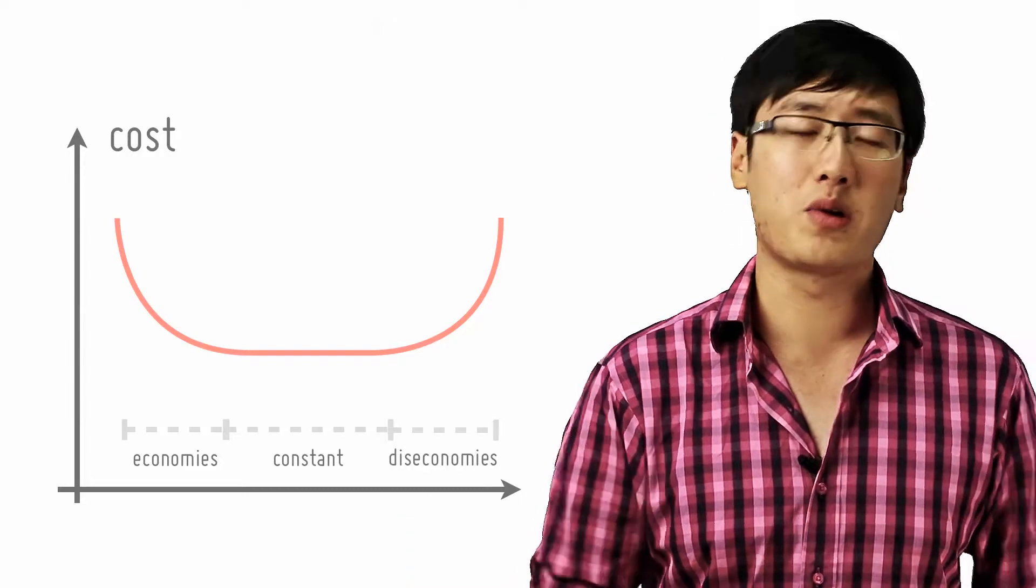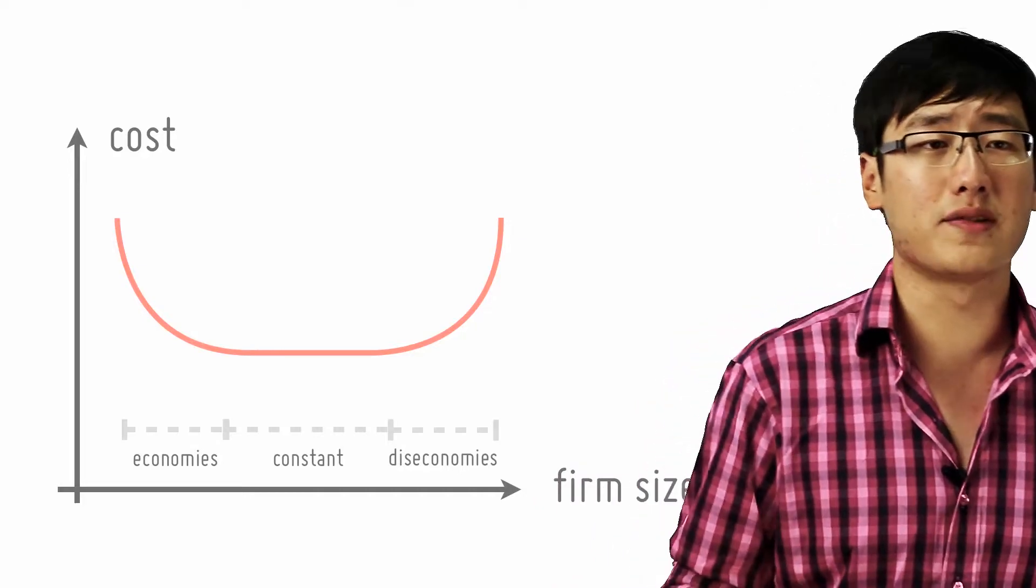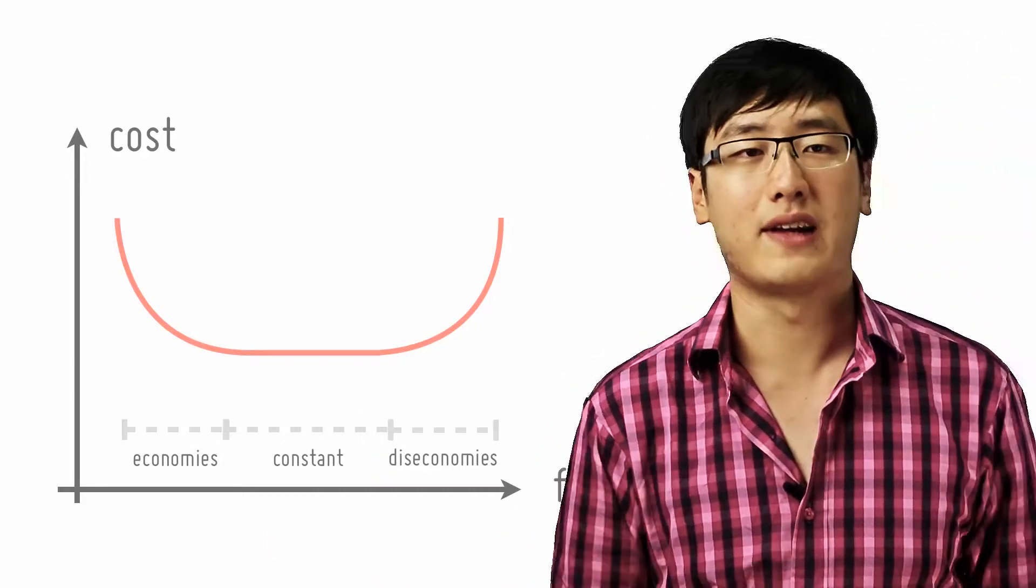You will flatten out, showing a region of constant returns to scale, and then it will increase, showing where diseconomies of scale happen when a firm gets really too big.